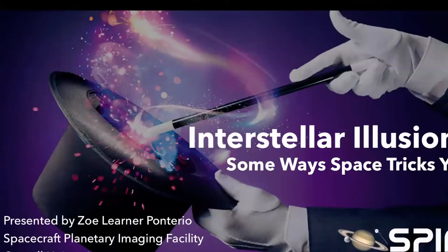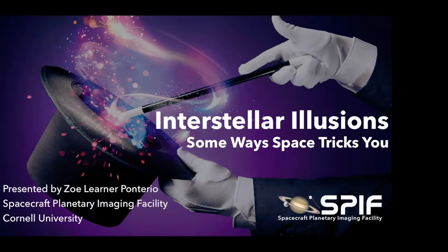I'm going to share my screen. I like to call this talk 'Interstellar Illusions.' Does anyone know what an illusion is? When someone does magic, like if they make something disappear, they didn't really make it disappear but they made it look like it disappeared — that's called an illusion. When something looks one way but really is another way. And there are a lot of illusions in space.